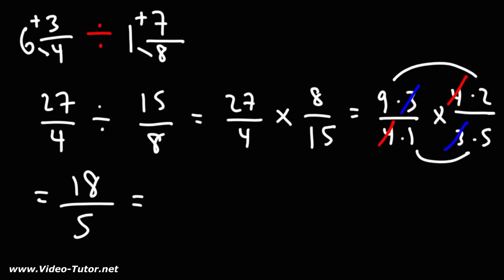Now let's convert this to a mixed number. What is the highest multiple of 5 just under 18? That's going to be 15. 18 minus 15 is 3. So we could break up 18 over 5 into 15 over 5 plus 3 over 5. 15 over 5, if you divide the 2, you get 3.